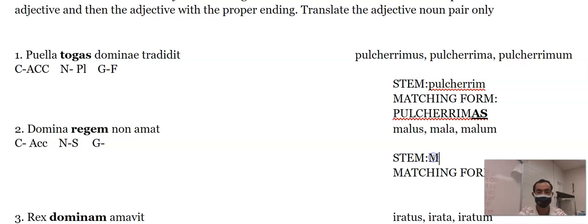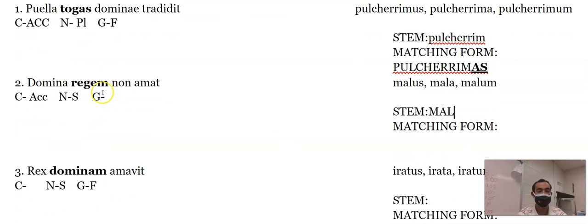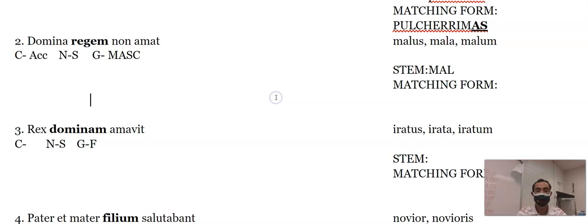Malus, we just did malus, so the stem is mal. Regum is a king, so king is masculine. So our matching form would be malum with a um, because that's our accusative masculine singular ending in the second declension.